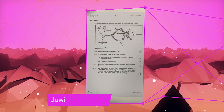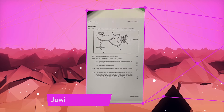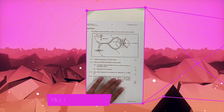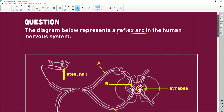Hi Tenfold, Jui here from the West End. Please help me. Hello. This represents a reflex arc. So, what is the difference between a reflex arc and a reflex action?